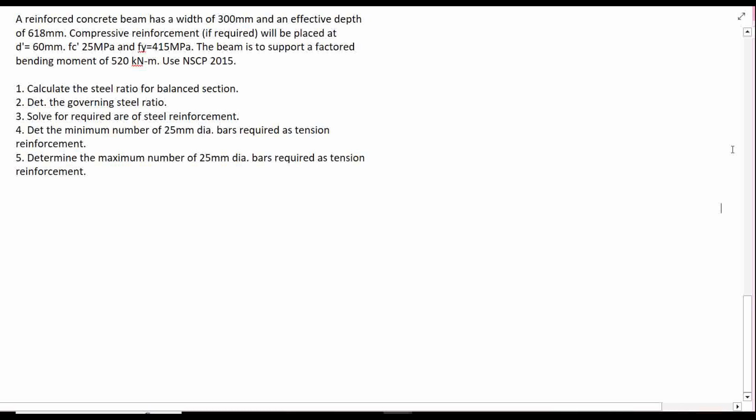Hey, what's up guys? Our problem for today: a reinforced concrete beam has a width of 300mm and an effective depth of 618mm. The compressive reinforcement, if required, will be placed at D' equals 60mm, where F'C is 25 MPa and F'Y is 415 MPa. The beam is to support a factored bending moment of 520 kN using NSCP 2015.